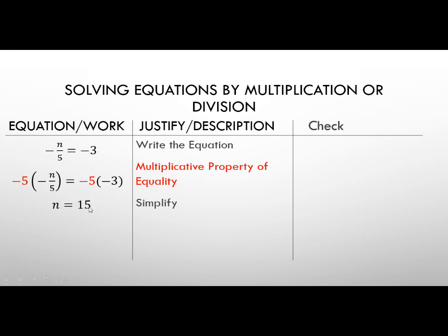Now, let's go over to our check. Rewrite the equation. Change the n to 15. Now, my 15 divided by 5 is going to equal 3, and we bring the negative down. It's still there, so negative 3 equals negative 3. Absolutely true. Therefore, this is the correct answer.